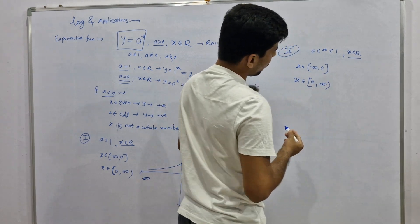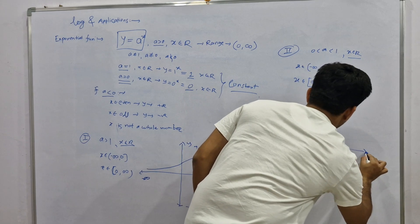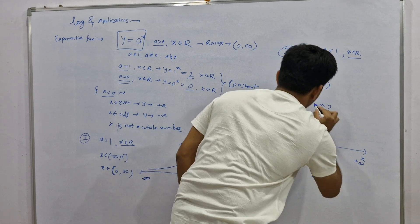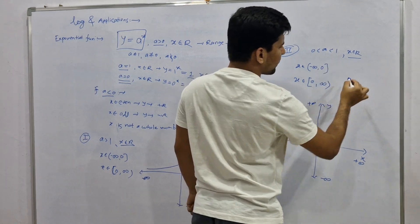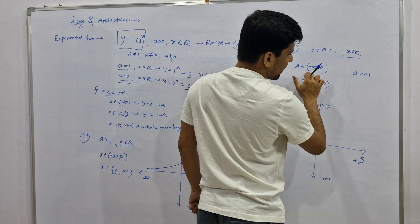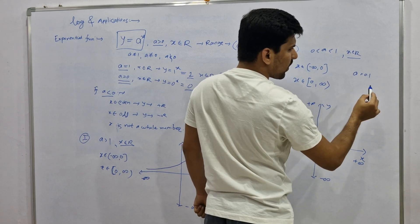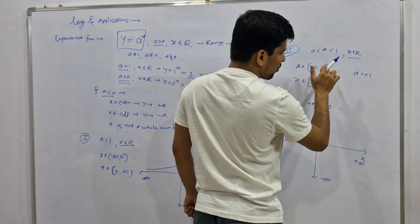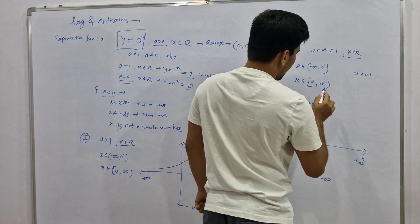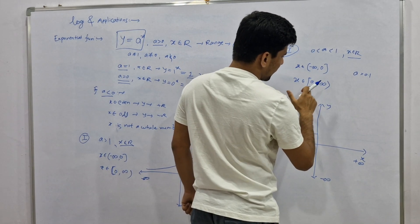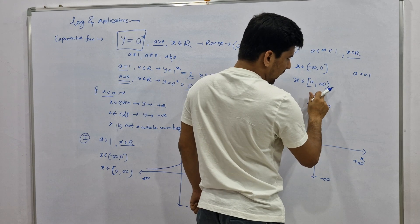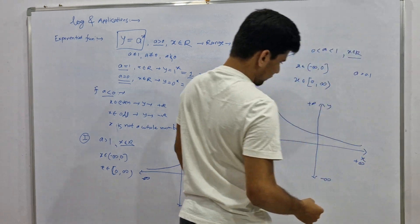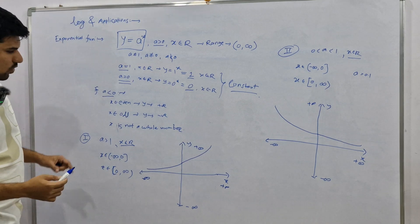Let's draw this graph. This is the x-axis, this is the y-axis, with negative infinity and positive infinity marked. For a between zero and one, let's consider a equals 0.1. For x going to minus infinity: one upon 0.1 to the power infinity — since 0.1 to the power infinity is close to zero, one upon zero gives infinity. For x equal to zero, anything to the power zero is one. So the graph comes from positive infinity down to one at x equals zero. Then for x going to positive infinity, 0.1 to the power infinity is close to zero, so the graph approaches zero. This is the exponential function.